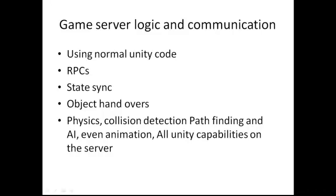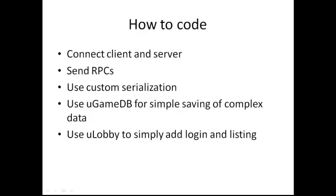So how do we create game server logic? We will use Unity normal code. Unity Park Suite's uLink is a multiplayer game development API, like Unity's built-in networking but much more powerful. It has RPCs — remote procedure calls — which means you can call functions across machine boundaries; clients can call functions on the server and vice versa. We have state syncing, so scripts can synchronize their states and variables with other machines. We have object handovers to move game objects between game servers with serialized data. We can also use all Unity features including physics, pathfinding, collision detection, AI code, animation, and particle systems, though on the server animation and particle systems are usually not required.